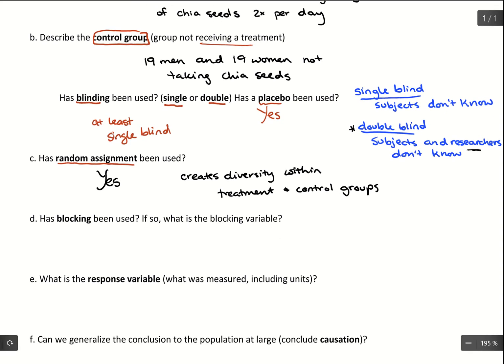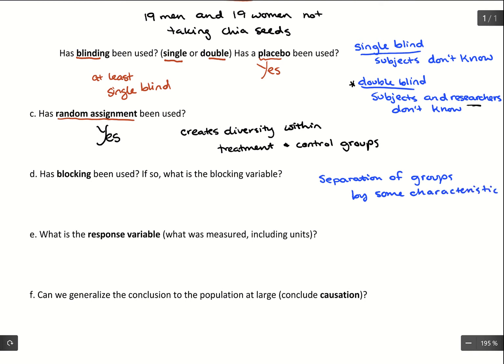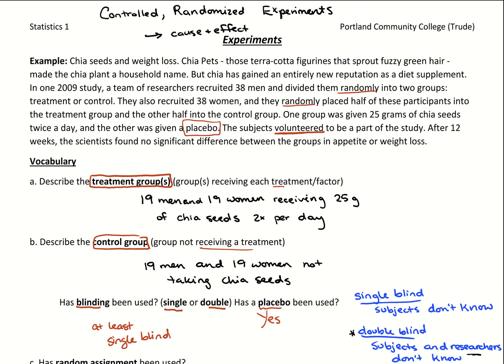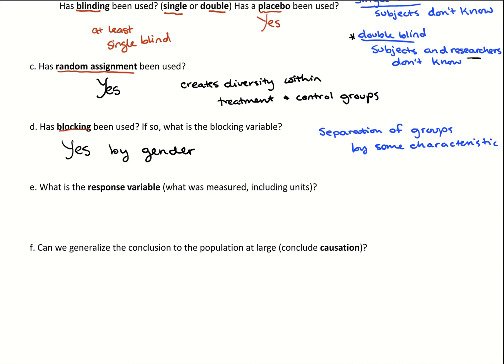Has blocking been used? Blocking is the separating of groups by some characteristic. In this case, yes — blocking was used by gender. They carried out a separation of men and women at the beginning. Blocking is especially useful in health studies since men and women tend to respond to things differently, so having that separation allows us to analyze what happened with women versus men. It's not required for every randomized experiment, but if it's beneficial, it's a good idea.